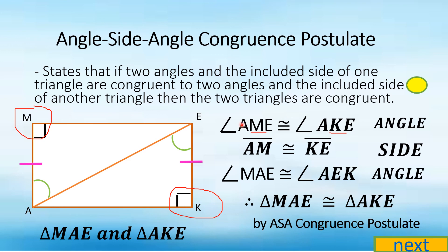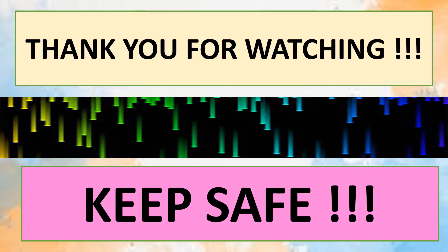That is all about the three congruence postulates: the side-side-side (SSS), ASA, and the SAS congruence postulate. I hope the illustration of the three postulates was clear. Thank you for watching and keep safe.